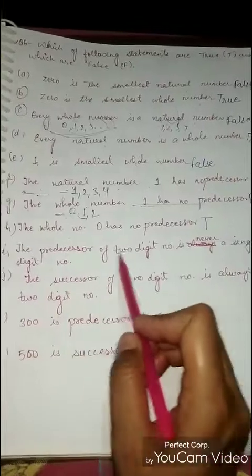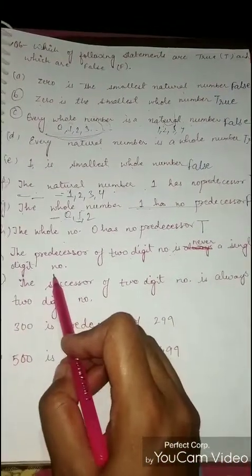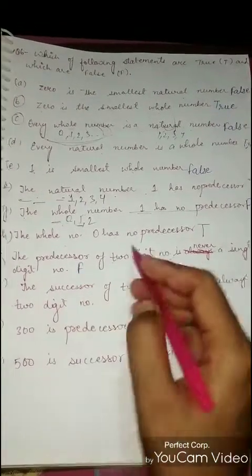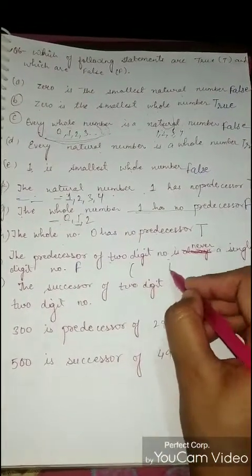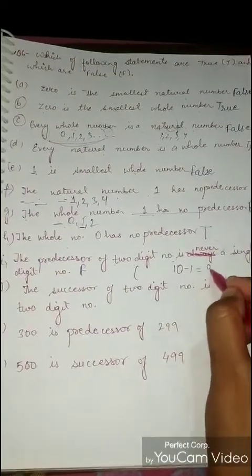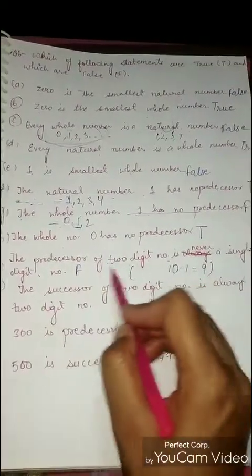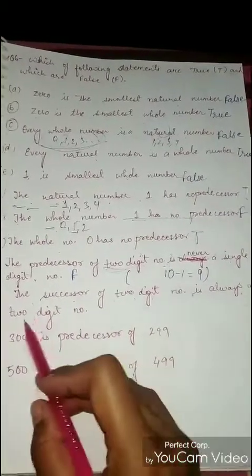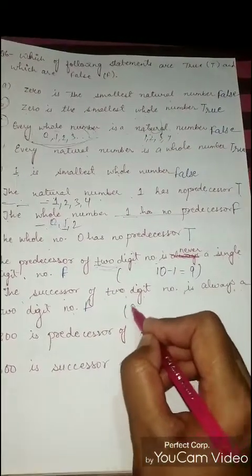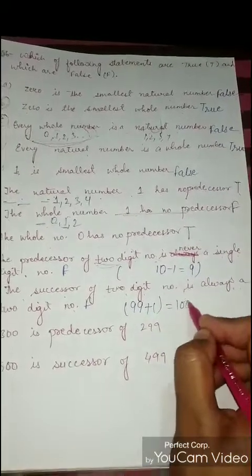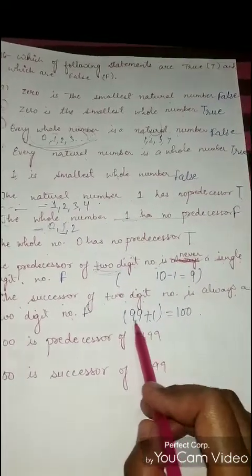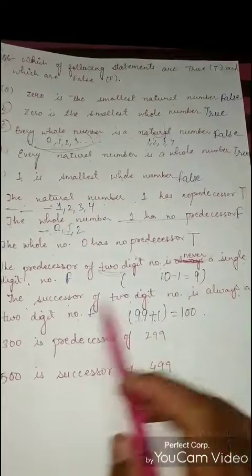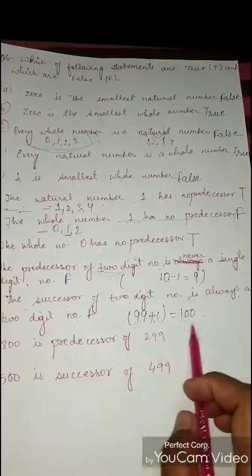The predecessor of a two-digit number is never a single-digit number - this is False, because the smallest two-digit number is 10 and the predecessor of 10 is 9, which is a single-digit number. The successor of a two-digit number is always a two-digit number - this is also False, because the successor of 99 is 100, which is a three-digit number.